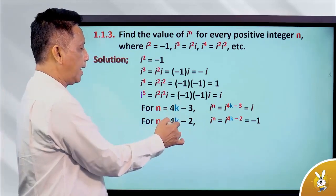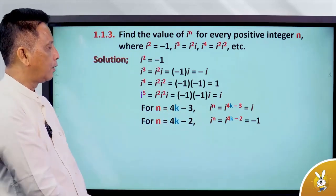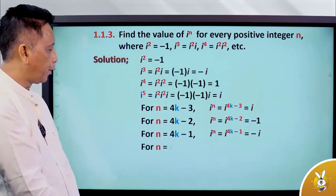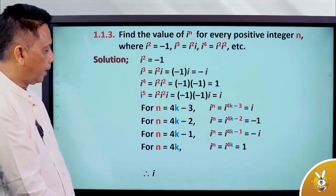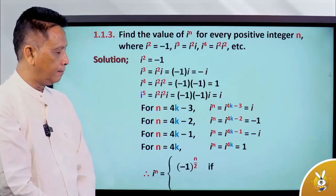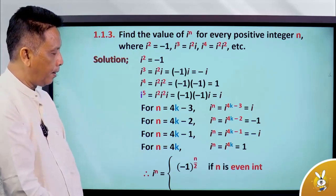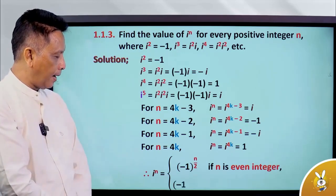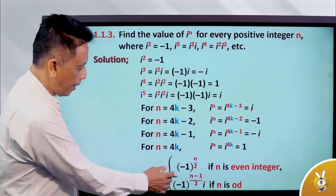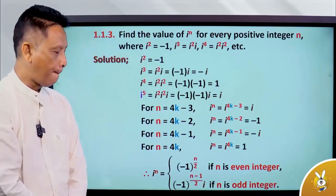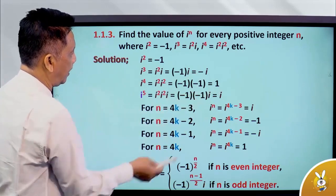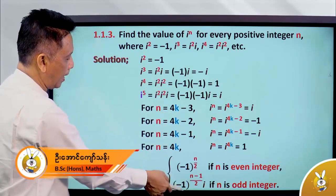We have to use this for 4K. We have to use 4K minus 1. We have to use 4K. We have to use 4K minus 1. We use 4K minus 1 of 2. 4K minus 1.